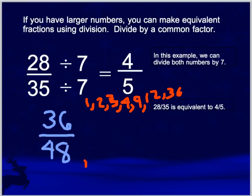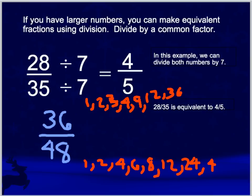We've got a lot of factors for forty-eight: one, two, four, six, eight, twelve, sixteen, twenty-four, and forty-eight. Looking at the greatest common factor, they're both divisible by twelve. So if we divide both numbers by twelve, we're going to get our answer in simplest form.